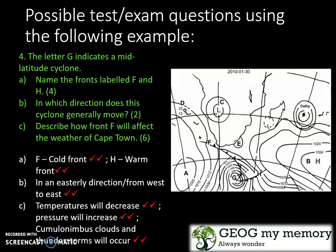They move in an easterly direction, or from west to east. Temperatures will decrease, pressure will increase, cumulonimbus clouds and thunderstorms will occur.